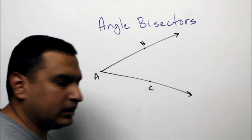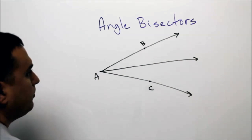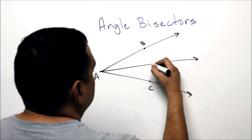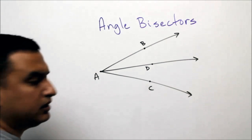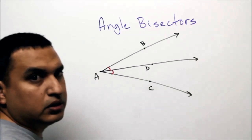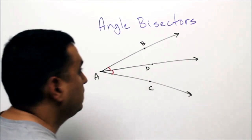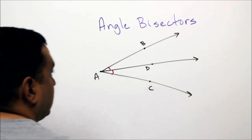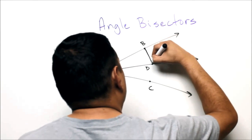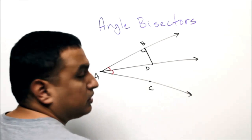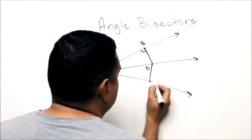Now let's review what an angle bisector is. If I have a ray that cuts through the angle — we'll call that point D — the first thing it does is make two congruent adjacent angles, so angle BAD is congruent to angle CAD. Also, when measuring the distance from D to B or D to C, that segment has to be perpendicular to that side — so it must be a 90-degree angle.